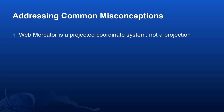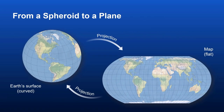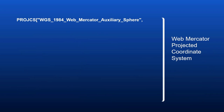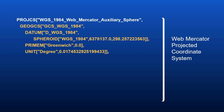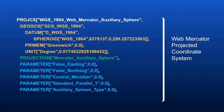First, Web Mercator is a projected coordinate system — it is not a projection. A projection is a mathematical algorithm to project a round surface like an ellipsoid to a flat surface like a map. One particular projection can have multiple projection parameters and can convert to multiple different projected coordinate systems. A projected coordinate system includes a full definition of the geographic coordinate system, the name of the projection algorithm, specific projection parameter values, and particular linear units. Here on the slide, we see all the elements of the Web Mercator projected coordinate system.